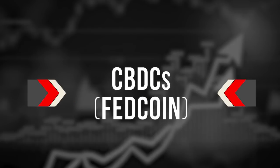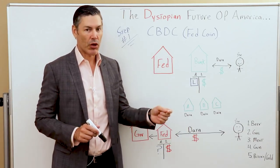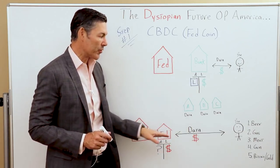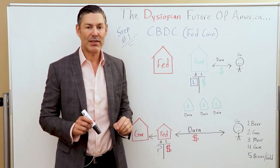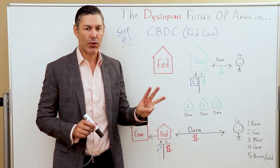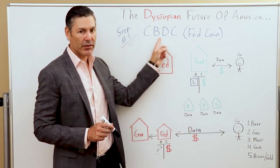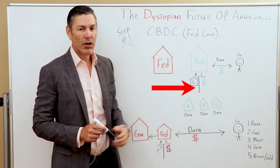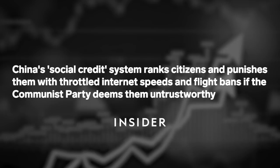Step number one, let's go over central bank digital currencies. In the case of the United States, this would be the Fed coin. Most of you know how this works. I'm going to review it quickly, but then at the end I'm going to go over some additional details that will help us put all the pieces of the puzzle together in step number three and see how this central bank digital currency could tie into a social score here in the United States — very similar to what China has been doing.